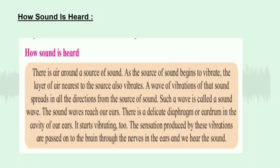How is sound heard? There is air around the source of sound. As the source of sound begins to vibrate, the layer of air nearest to the source also vibrates. A wave of vibration spreads in all directions from the source of sound. Such a wave is called a sound wave. The sound waves reach our ears. There is a delicate diaphragm, or eardrum, in the cavity of our ears. It starts vibrating too. The sensation produced by these vibrations is passed on to the brain through the nerves in the ear, and we hear the sound.